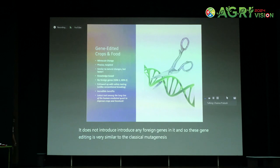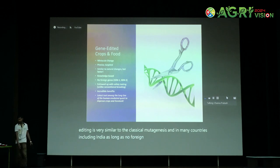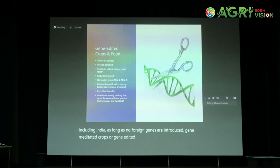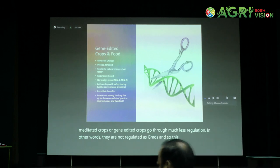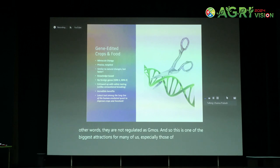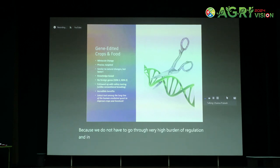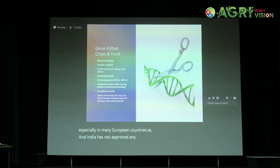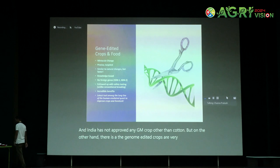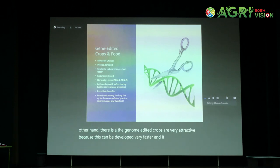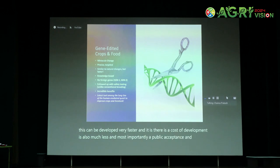In many countries, including India, as long as no foreign genes are introduced, genome-edited crops go through much less regulation — they are not regulated as GMOs. This is one of the biggest attractions, especially for those of us working in universities, because we do not have to go through a very high burden of regulation. In many countries, even GM crops are not allowed, especially in many European countries. India has not approved any GM crop other than cotton. But genome-edited crops are very attractive because they can be developed much faster, the cost of development is much less, and public acceptance and regulatory ease are much greater compared to GM crops.